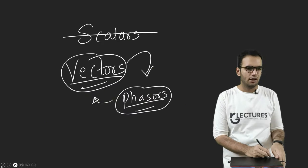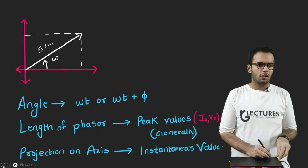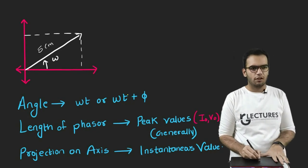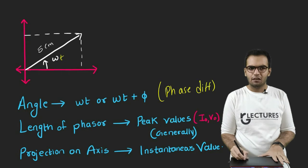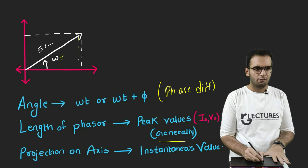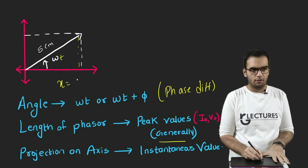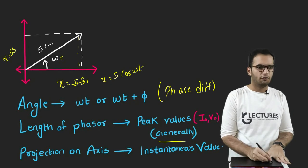This was a bit of theory. You will not understand much from this lecture because we ultimately have to make the diagrams. The angle in a phasor diagram is the phase difference. The length of the Phasor indicates the peak values, and their projection on the x-axis gives the instantaneous value — for example, x = φ sin(ωt) or φ cos(ωt). These are called instantaneous values.